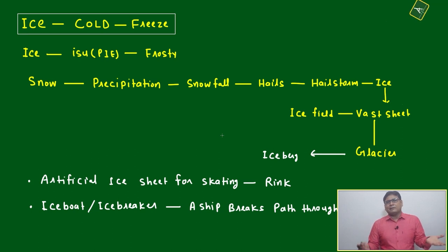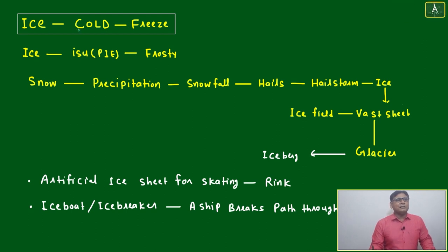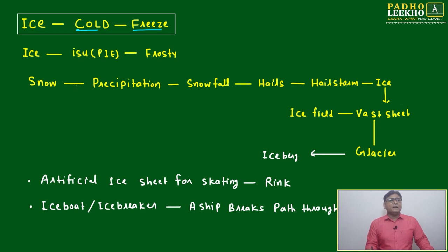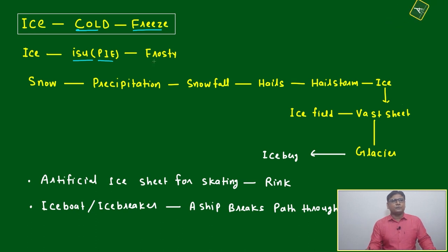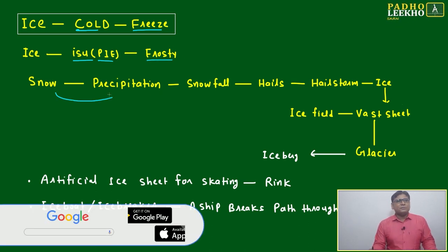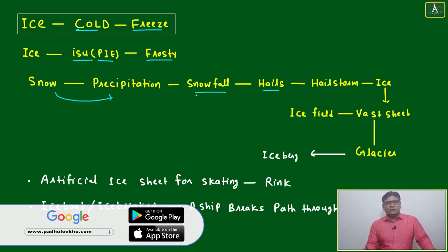Another major category of living things is human beings. When ice comes to mind, we immediately feel coldness — our fridge, for example. The word 'ice' comes from an Indo-European root, meaning frosty, snow, precipitation, snowfall.